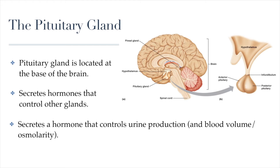One of the hormones that the pituitary gland secretes is a hormone that directly controls urine production. It's a hormone that essentially can control our blood volume, because how much urine we produce basically determines how much water is in our body and therefore how much volume our blood has, as well as the osmolarity of our blood — how watery our blood is. That hormone is called antidiuretic hormone, also called vasopressin.